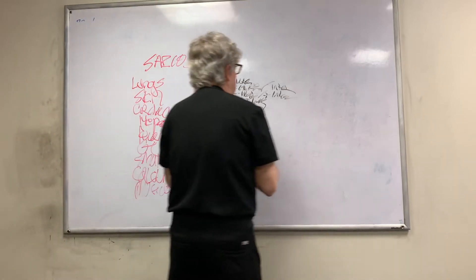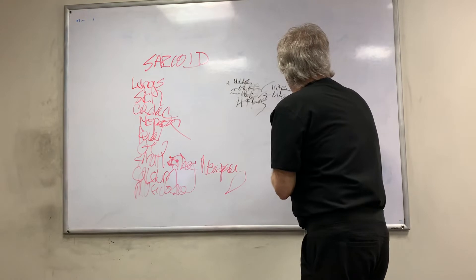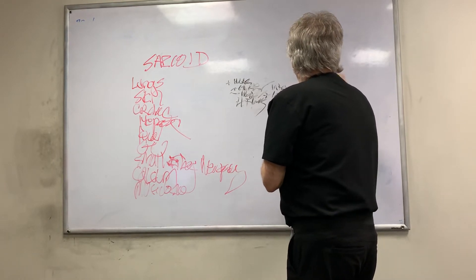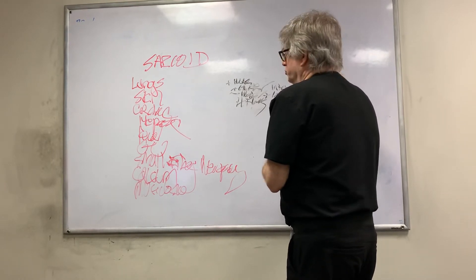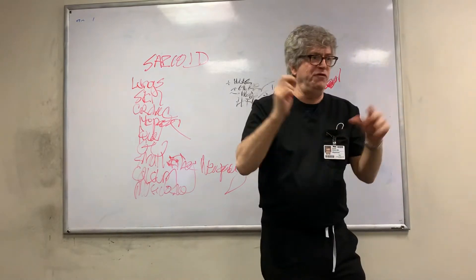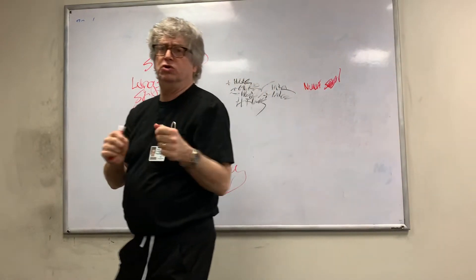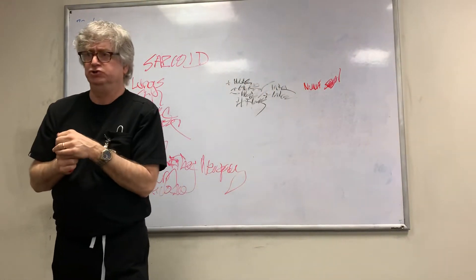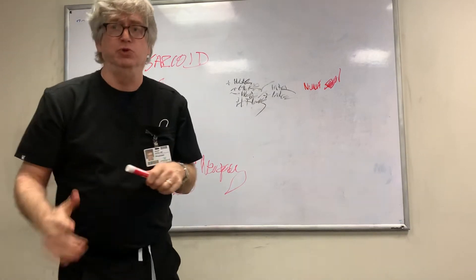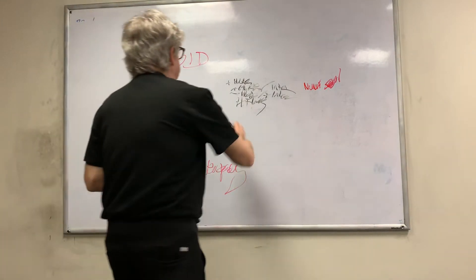There is a variant called nodular sarcoid, which presents with pulmonary nodules all over. Normally, if you have a patient with pulmonary nodules all over, you don't think of sarcoid — but there is this nodular sarcoid variant.